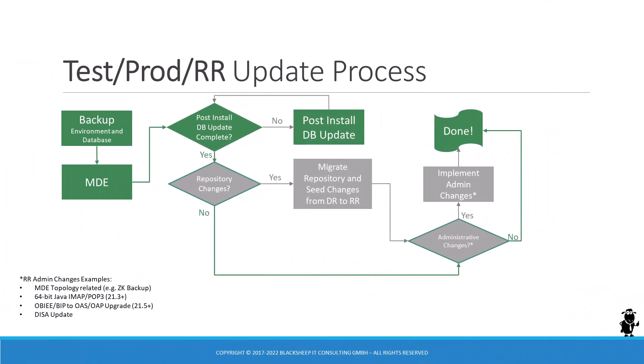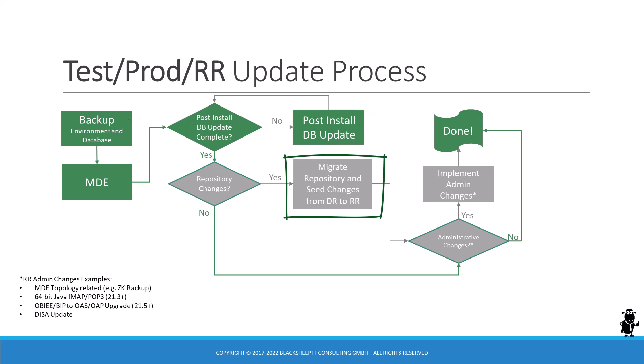The same is true for test or production, also known as RR environments, where the update process is a little shorter. The mandatory steps are the same: backup your environment, run MDE, run post-install database update. If there's nothing else to do, you're done. Of course, you have to repeat the update process for every Siebel instance. If the DR update included repository changes, you have to use the migration application to deploy the new and updated artifacts from the development environment to the runtime environment. Similarly, you might have some administrative changes on your checklist that you need to execute before declaring the update complete.